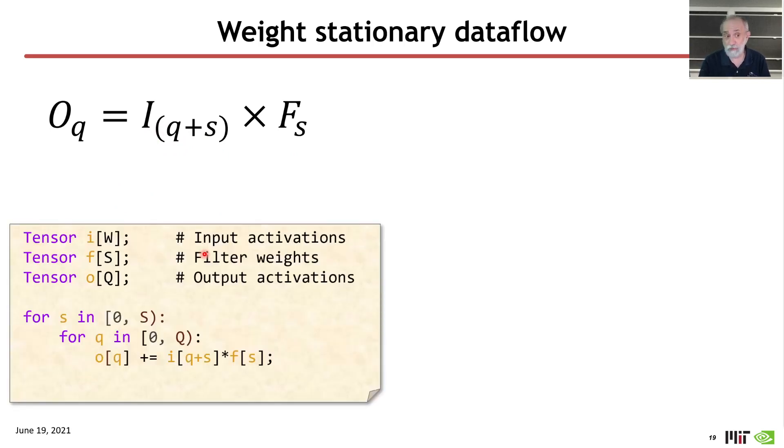As we showed before, if we want to talk about this as a schedule, we can represent the sequence of operations as a loop nest. So here in the outer loop, we're going to traverse this index that is used for accessing the filter weights, and it's going to traverse from zero to capital S, the number of filter weights.